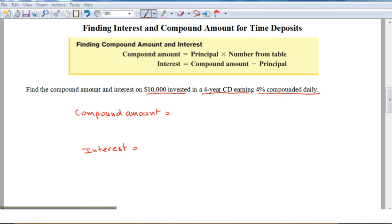Hello, in this example we'll find interest and compound amount for time deposits. A time deposit account is when banks pay higher interest rates on funds left on deposit for longer time periods.